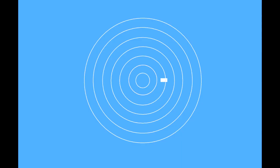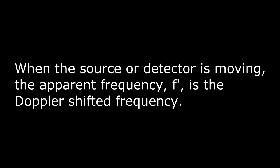The listener encounters fewer wave crests per second when moving away from the source. The shift occurs whether the source or the listener is moving. The listener is sometimes referred to as the detector. A stationary source emits a frequency f. When the source or detector is moving, the apparent frequency f prime is the Doppler shifted frequency.